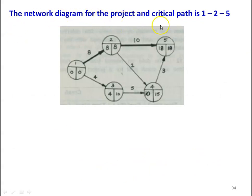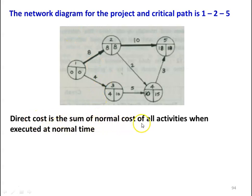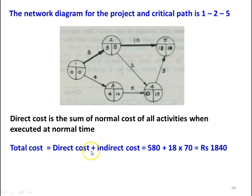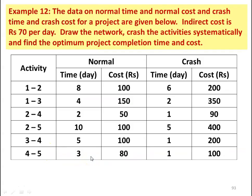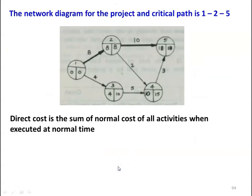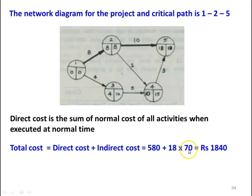The network diagram for the project is drawn and the critical path is identified. The TE and TL values and slack values are calculated. The critical path is 1-2 and 2-5. The direct cost is the sum of normal costs of all activities when executed at normal time. The normal duration is 18 days. Total cost equals direct cost plus indirect cost: direct cost is ₹580, indirect cost is 18 days × ₹70 = ₹1,260, giving a total cost of ₹1,840 at normal duration.